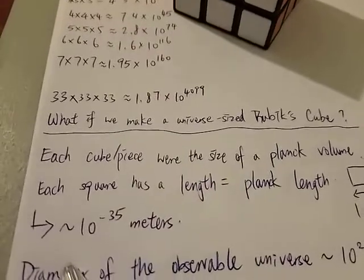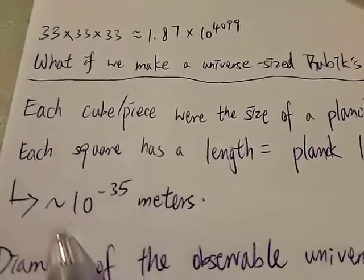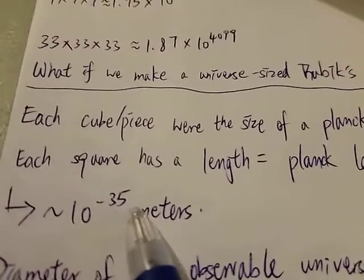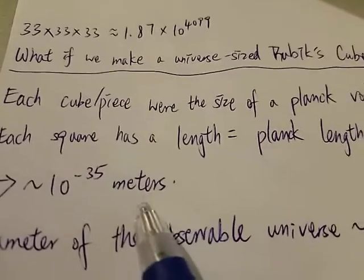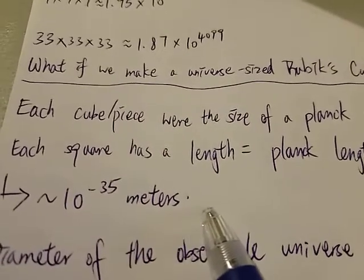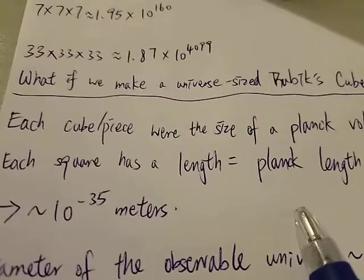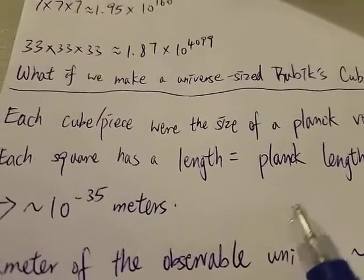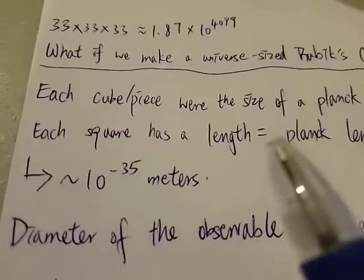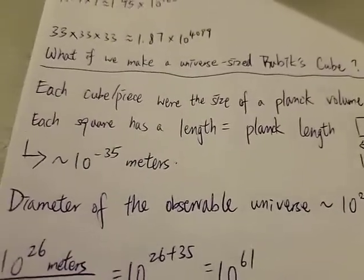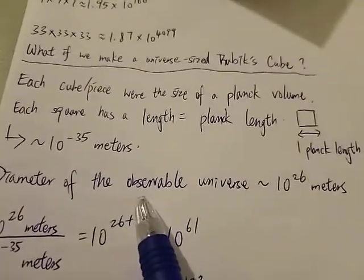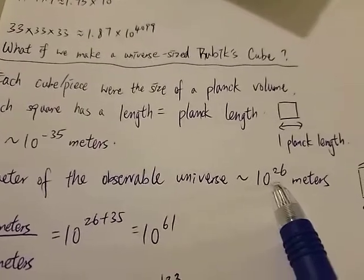A Planck length has a length of around 10 to the minus 35 meters, which is extremely, extremely small. Way, way smaller than even an atom or even a neutron or electron.